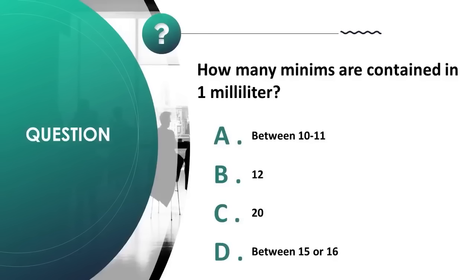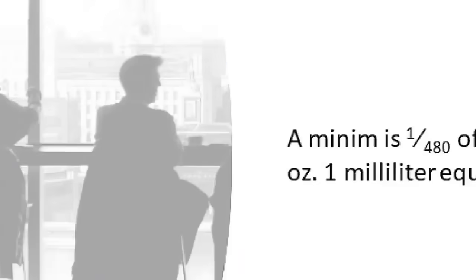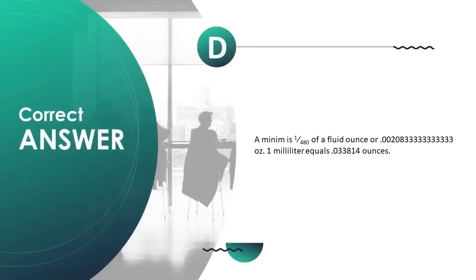How many minims are contained in 1 mL? A) between 10 to 11, B) 12, C) 20, D) between 15 or 16. Correct answer is D. A minim is 1/480 of a fluid ounce. There are approximately 15 to 16 minims in 1 mL.